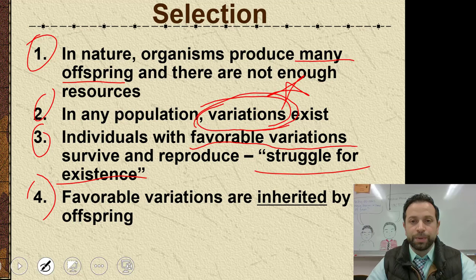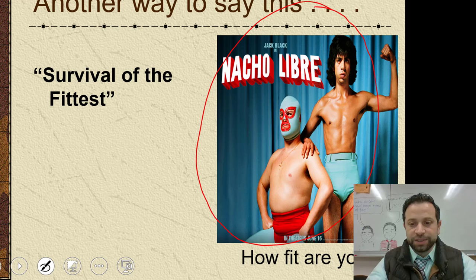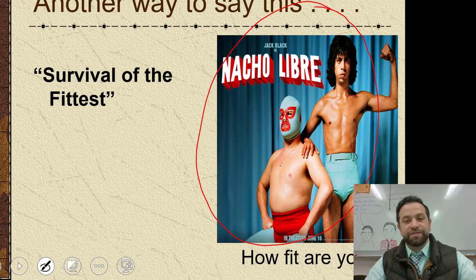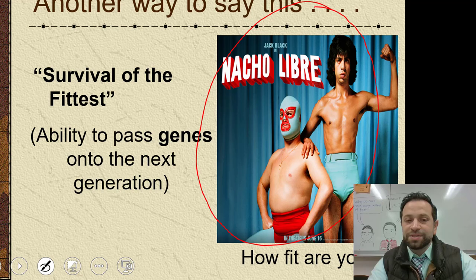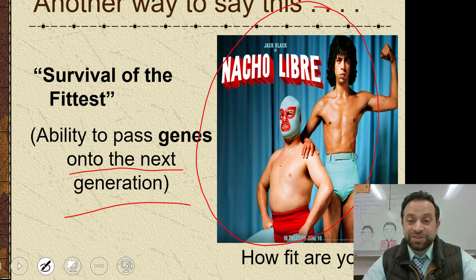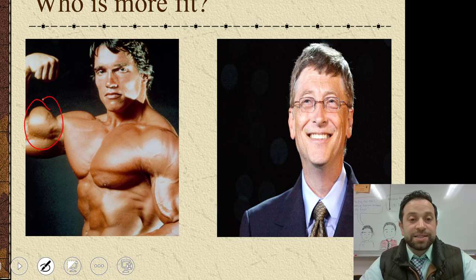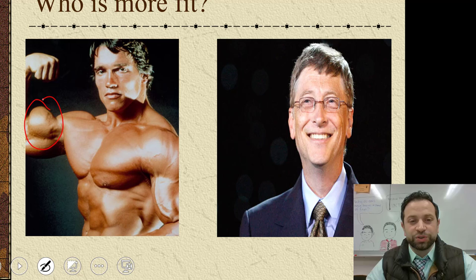So those are the four components of natural selection. This brings us to survival of the fittest — one of my favorite movies, Nacho Libre. Now we have to remember: a lot of us think about survival of the fittest as who's the buffest or the fastest, and that could be the case. But survival of the fittest really means the ability to pass on your genes onto the next generation, and it may not have anything to do with how big and buff you are. So which is more fit — Arnold or Bill Gates? You might think Arnold because of his muscles, but you've got to think about who has the ability to pass on their genes and how many children they each have.